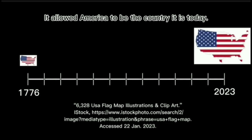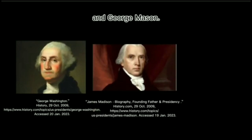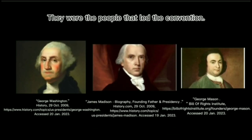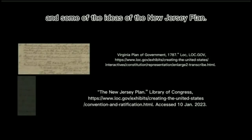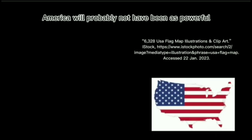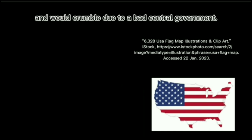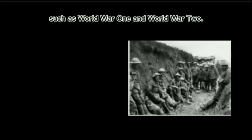In conclusion, the Constitutional Convention is an extremely important moment in history. It allowed America to be the country it is today. Key figures at the Convention were George Washington, James Madison, and George Mason. The Convention made extremely important changes — the Virginia Plan and the New Jersey Plan — which helped bring the American government to life, incorporating most of the ideas of the Virginia Plan and some of the New Jersey Plan. Without these changes, America would probably not have been as powerful as it is today and would have crumbled due to a bad central government. We think that this is a pivotal moment in history because events like World War I and World War II could have gotten out of hand without a strong United States of America.